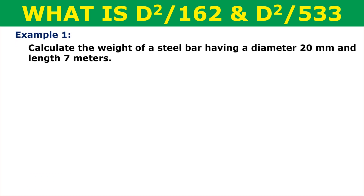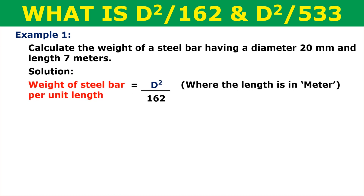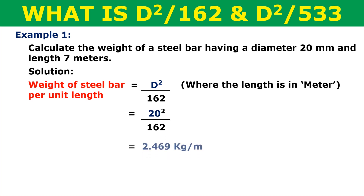We know the formula d² by 162, which is used to calculate the weight of reinforcement per unit length, but do we know how we got this formula? Let us use a few examples to see how to use these formulas to calculate the weight of steel bar. The first example is to calculate the weight of a steel bar having a diameter of 20 mm and length 7 meters. The weight of steel bar per unit length is equal to d² by 162, where the length is in meters. Substituting the value of d, we get 20² by 162, which is equal to 2.469 kg per meter.